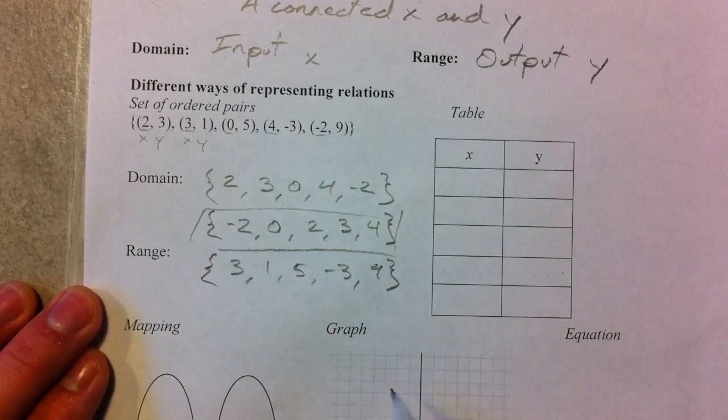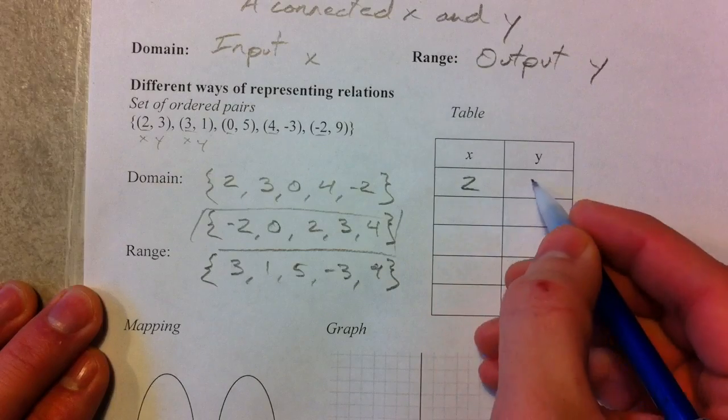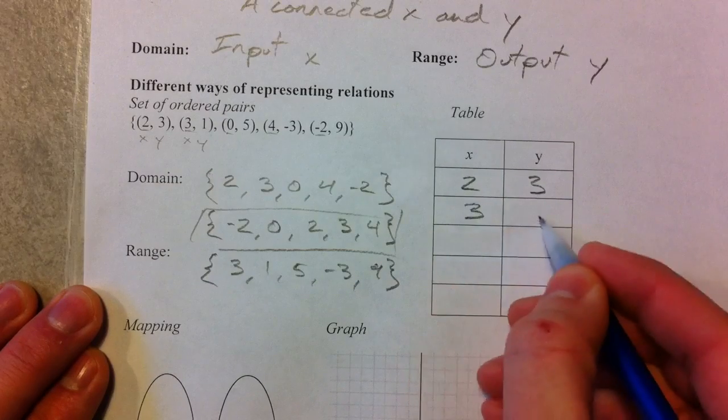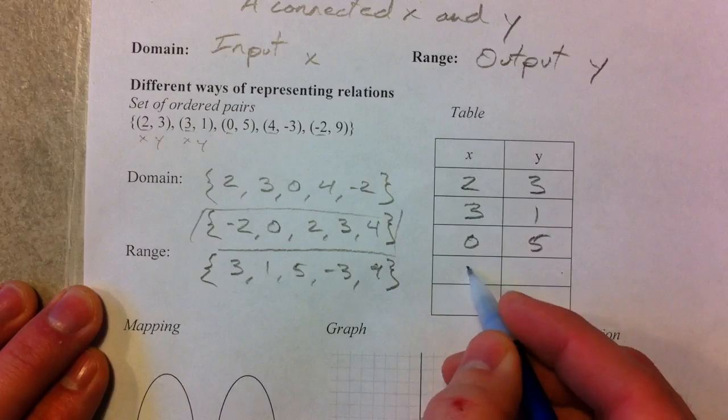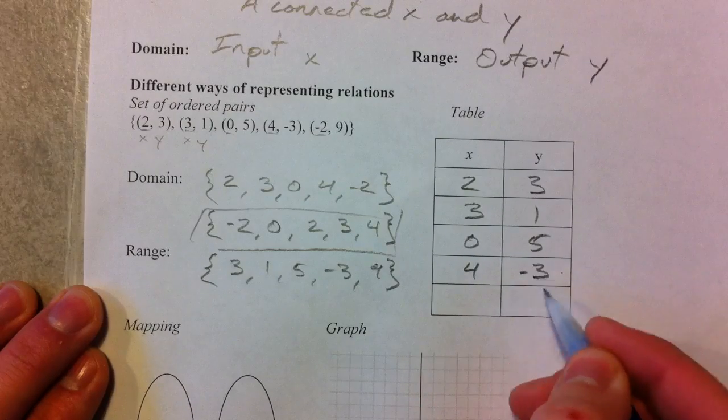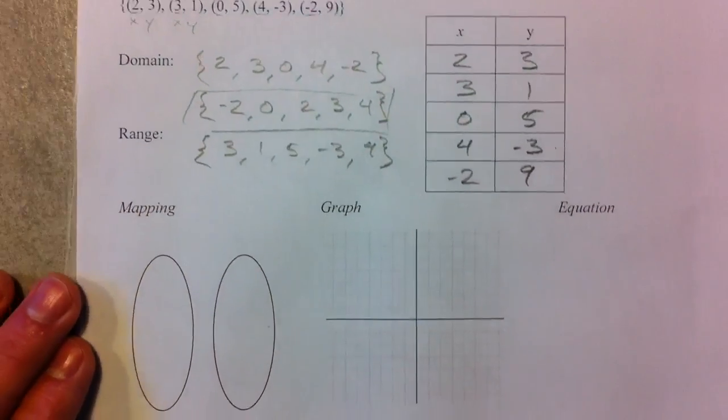So set of ordered pairs is one way of representing a relation. Another way is just a table of values, and you've been using this for quite a while. And that's just where you pair the X with the Y right next to it. No big deal. Just another way of representing it.